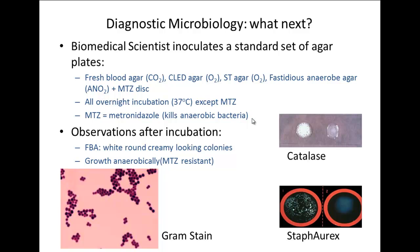The biomedical scientist has inoculated those plates and incubated them overnight. The anaerobic agar plate gets an extra day in the incubator because anaerobes grow more slowly — we've talked about doubling times for anaerobes being a lot less than for facultative anaerobes and obligate aerobes. The biomedical scientist then gets the plates out and sees colony forming units growing, does a Gram stain, and sees nice clusters of gram positive cocci — cocci because they are round, gram positive because they are purple.